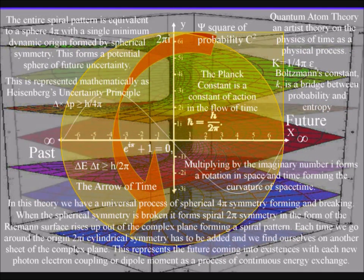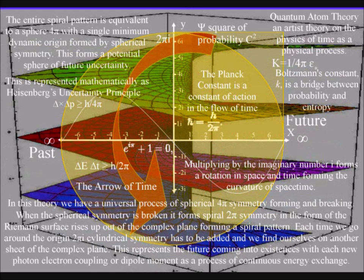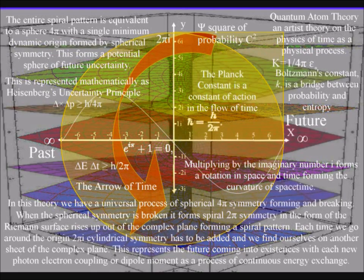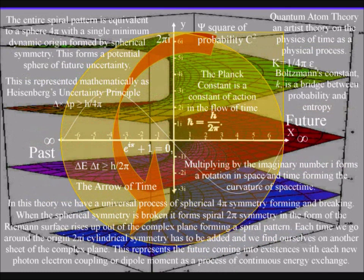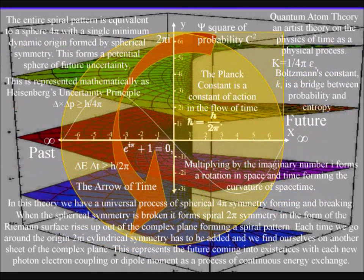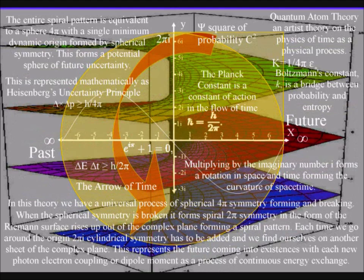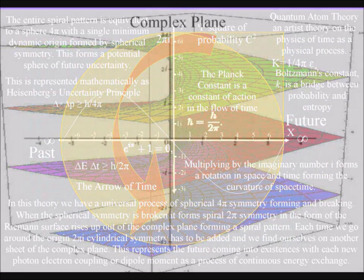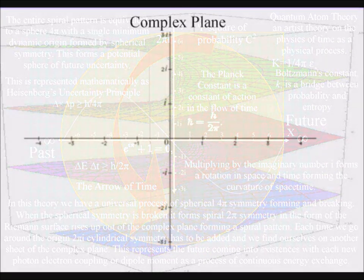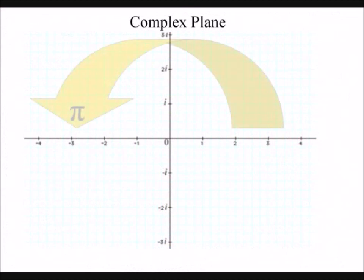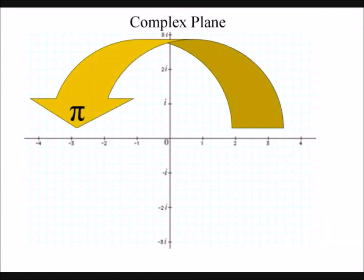Each time we go around the origin — two pi — cylindrical symmetry has to be added, and we find ourselves on another sheet of the complex plane. Pi represents a semicircle of the complex plane, with two pi representing a complete rotation.